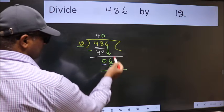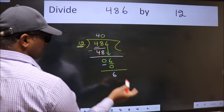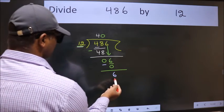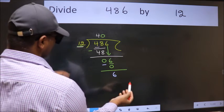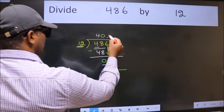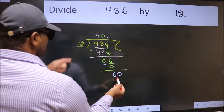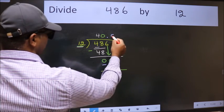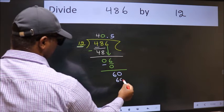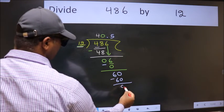Over here we did not bring any number down, and 6 is smaller than 12. So now we can put dot and take 0, so 60. When do we get 60 in 12 table? 12 fives 60. Now we subtract, we get 0.